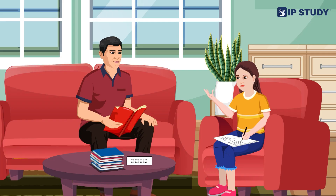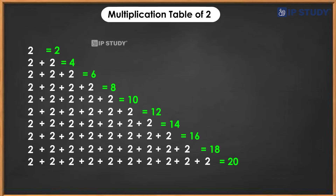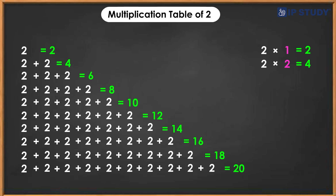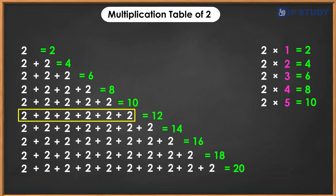Okay dad. When we multiply two by one, we get two — it's like saying one times two equals two. Two by two, we get four — it's like saying two times two equals four. Two by three, we get six — it's like saying three times two equals six. Two by four, we get eight — it's like saying four times two equals eight.